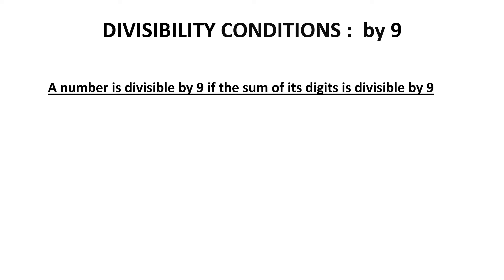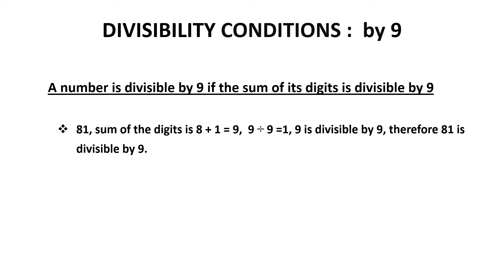Divisibility conditions: divisibility by the number 9. Without doing actual division, we can find out if a number is divisible by 9. The rule is: a number is divisible by 9 if the sum of its digits is divisible by 9. Let us now take some examples.